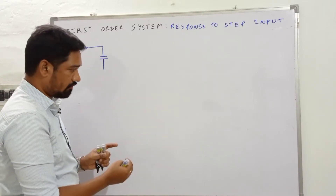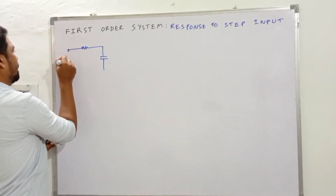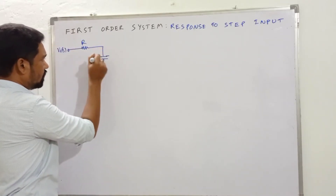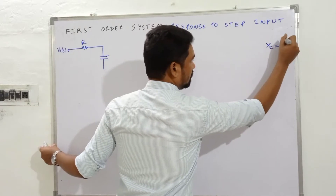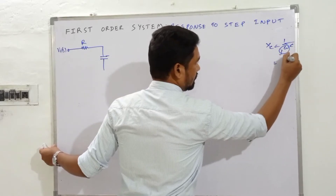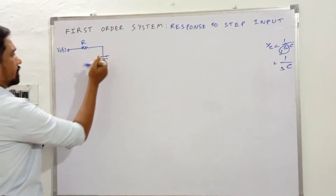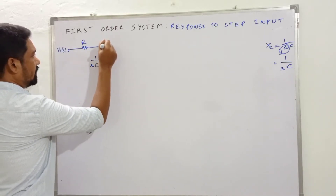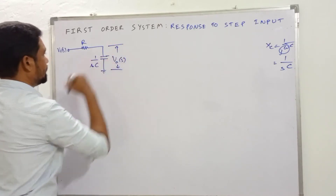The analysis is carried out in the Laplace transform domain, and at some point we obtain the inverse Laplace transform to get the response. We have V_i(s) as the input, resistance R, and the capacitance in s-domain. The reactance is X = 1/(jωC), and substituting jω with s gives the s-domain representation of a capacitor as 1/(sC). The output voltage V_out(s) is collected across the capacitor.